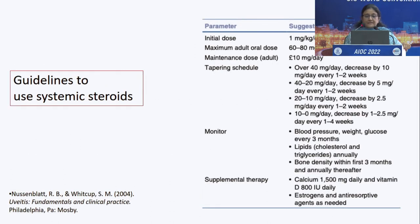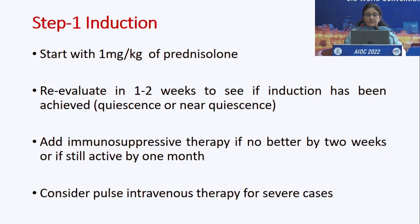Guidelines for systemic steroids: start with 1 mg/kg per day, often in a dose of 60 to 80 mg/day, then use a tapering schedule. Oral corticosteroids are often supplemented with calcium and vitamin D because there is always a risk of osteoporosis. The induction phase uses full dose systemic steroids at 1 mg/kg, then gradual taper. We add immunosuppressive therapy if there is no response after 2 weeks to 1 month.